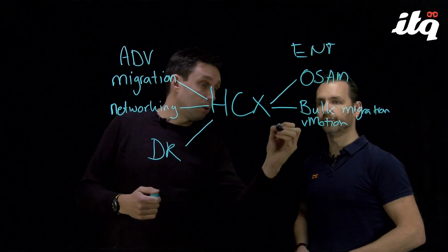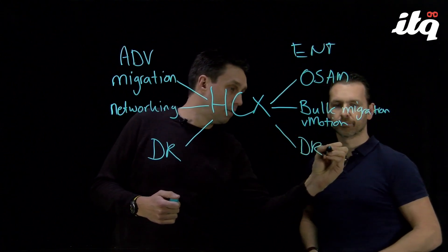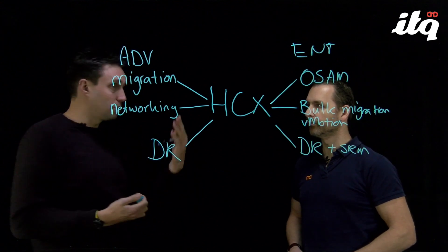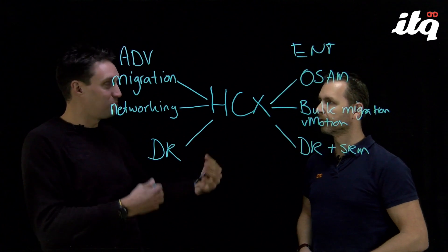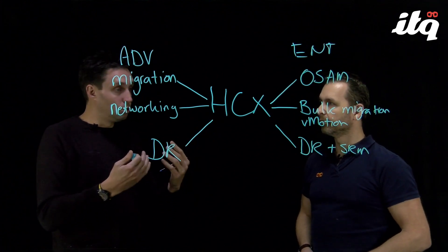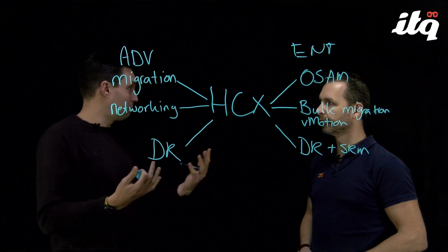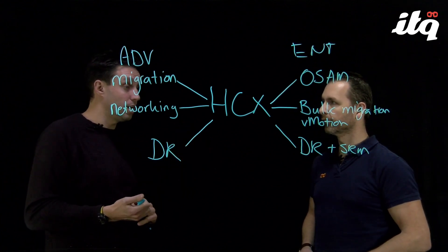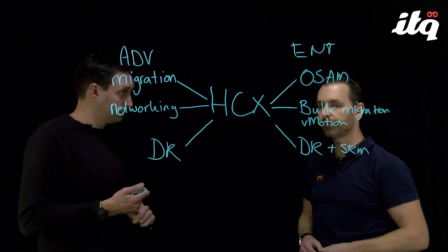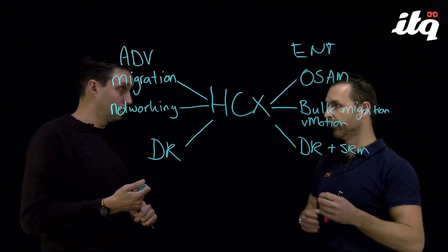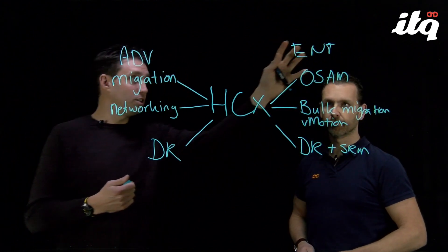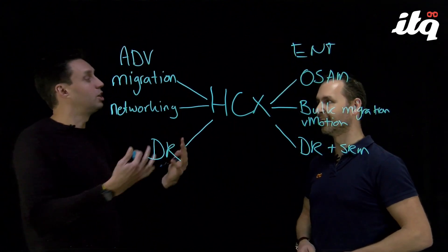Another thing that HCX Enterprise offers is DR in combination with SRM. We can use HCX for the replication, but connect SRM to HCX — use the replication functionality of HCX and use the runbook capability, the automated disaster recovery feature of SRM. SRM leverages the replication and migration part of HCX, and the complex runbooks with all kinds of orchestration actions are handled by SRM. By the way, SRM is not included in HCX Enterprise — it's still a separate solution, but you can use it in combination with HCX Enterprise.